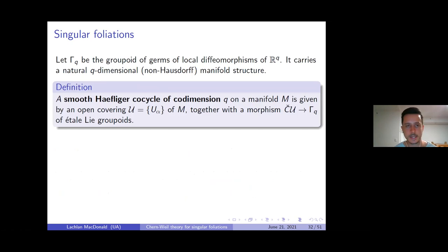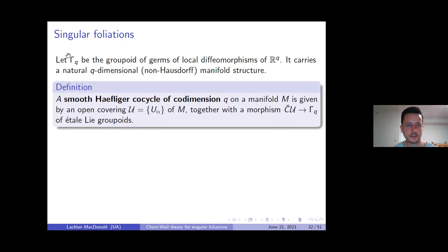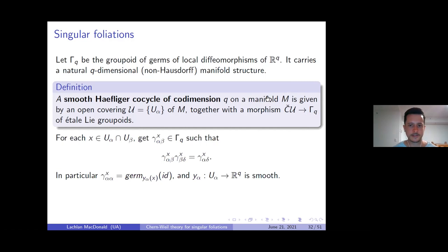My collaborator and I found it necessary to focus on a subclass of Stefan-Sussmann singular foliations. Let Γ_Q denote the groupoid of germs of local diffeomorphisms of Q-dimensional Euclidean space — the Haefliger groupoid. A smooth Haefliger cocycle of codimension Q on a manifold is given by: an open covering of M, and a smooth morphism from the Čech groupoid of that covering to the Haefliger groupoid Γ_Q.